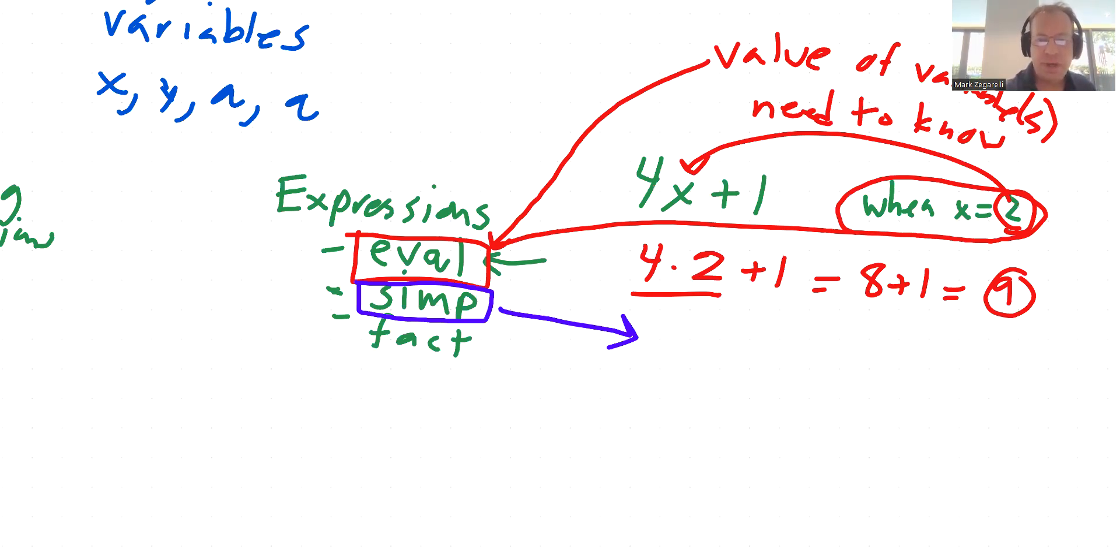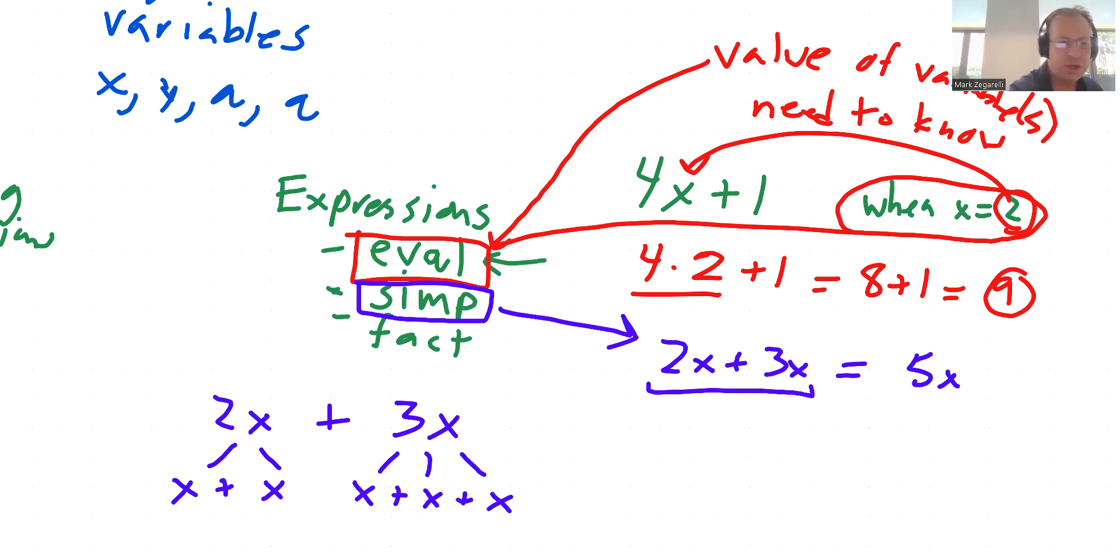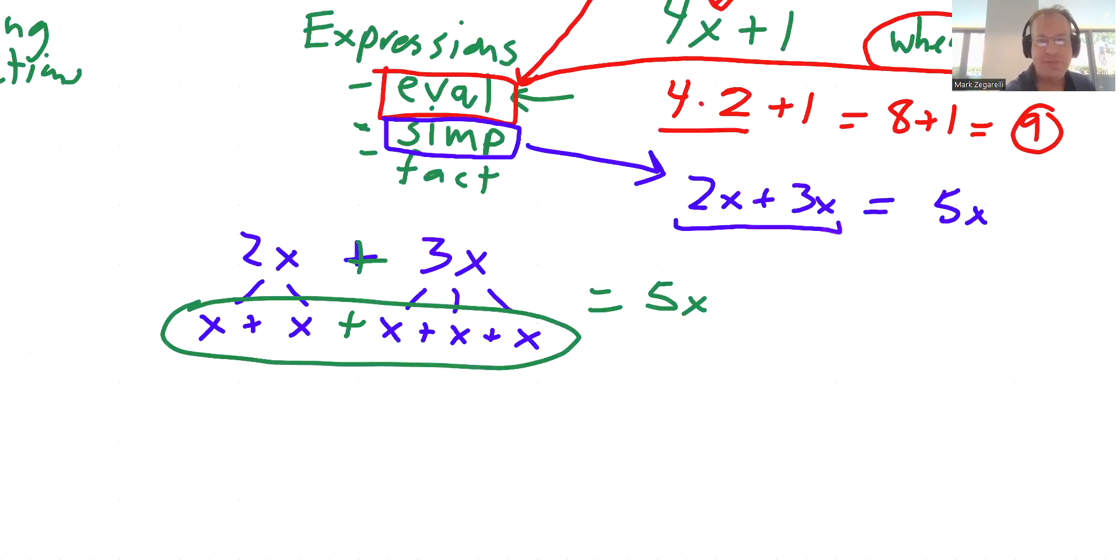Simplification, for example, is 2x plus 3x plus 5x. How does this work? Remember that when we say 2x, we really mean x plus x, and 3x means x plus x plus x. So if we're going to put them all together, we're going to end up with 5x.